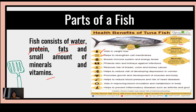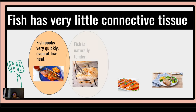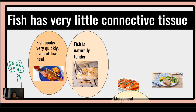In return, these nutrients will protect the skin and kidneys, boost the immune system, reduce the risk of depression, promote development of muscles, reduce blood pressure, and improve circulation of the blood and help prevent inflammatory disease. Fish are very healthy. There are fish that have very little connective tissue, which means they are quick to cook at a low temperature and are very tender. Moist cooking methods are used not to create tenderness, but to preserve moistness and provide variety.